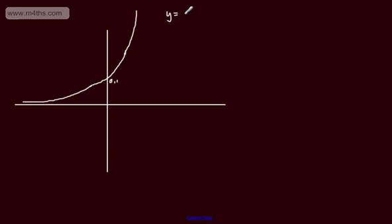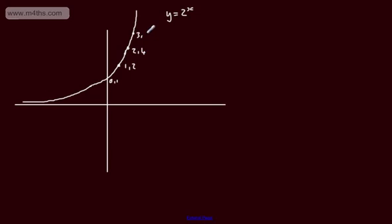The first curve is Y equals 2 to the power of X, passing through (0, 1). If X is 1, we get the point (1, 2). If X is 2, we get (2, 4). If X is 3, we get (3, 8).